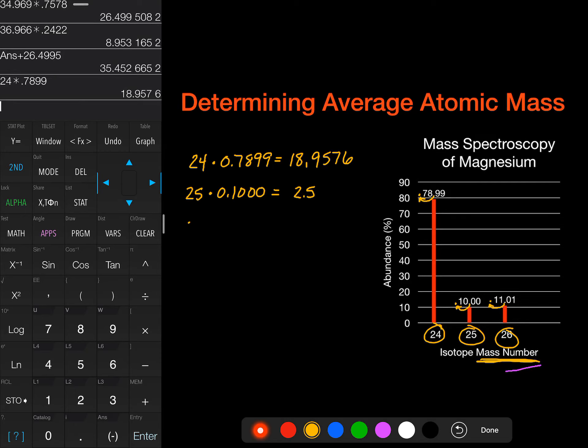And then finally, for magnesium 26, we are going to have 26 times 0.1101, which gives us a value of 2.8626.